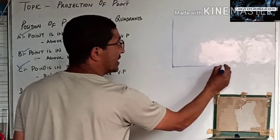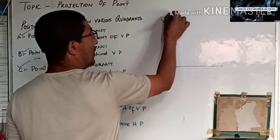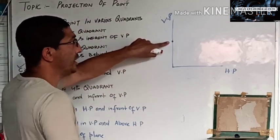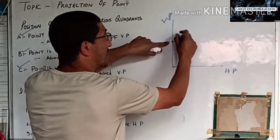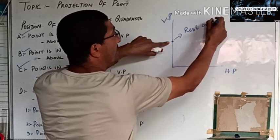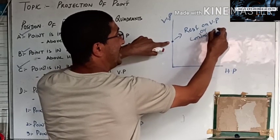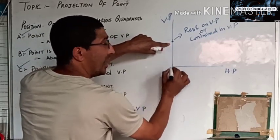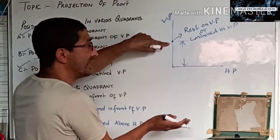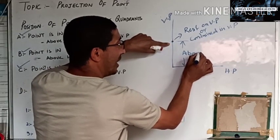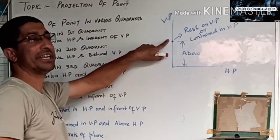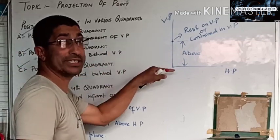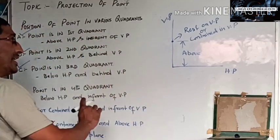Now the opposite condition: the point is on VP — resting or contained in VP. This is my VP and this is my HP. The point is in VP, but looking at the horizontal plane, the point is above the HP line. So the condition is: point contained in VP and above HP.